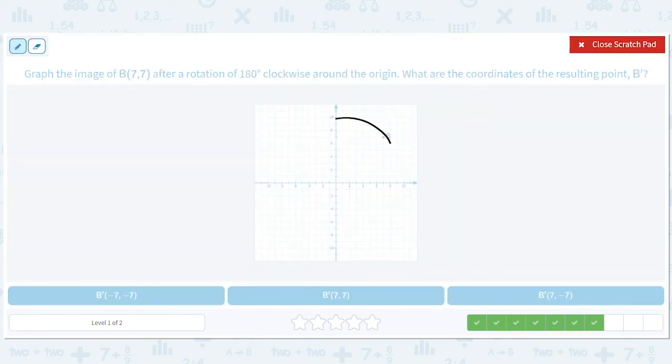So we have 7, 7 here. We're doing 180 degree clockwise rotation. So that's going to be this way. And it's going to go to negative 7, negative 7.